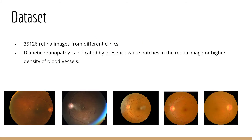Our dataset contains about 35,000 retina images from different clinics, and these images were taken with different cameras and image conditions, contributing to a wider variety and noise in the dataset. In general, diabetic retinopathy is indicated by the presence of white patches in the retina or a higher density of blood vessels.